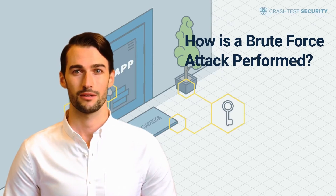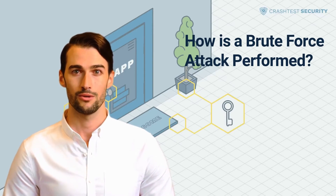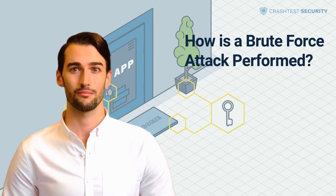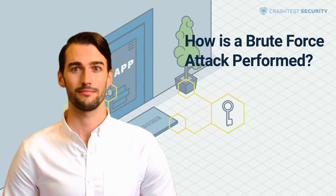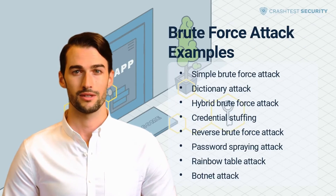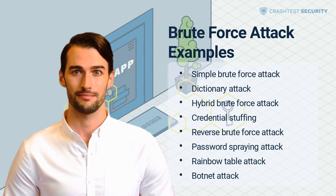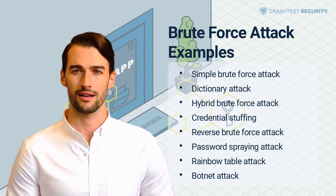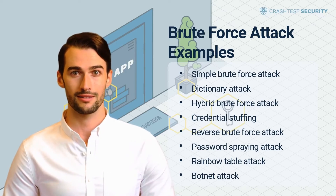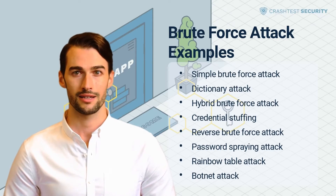In addition, bot kits can also be purchased on the dark web. These provide access to botnets — hijacked computers whose processing power is used to launch a brute force attack. Following are the main types of brute force attacks, based on their attack vector and method. Other types of attacks not listed here include mask attacks, permutation attacks, rule-based attacks, and others.